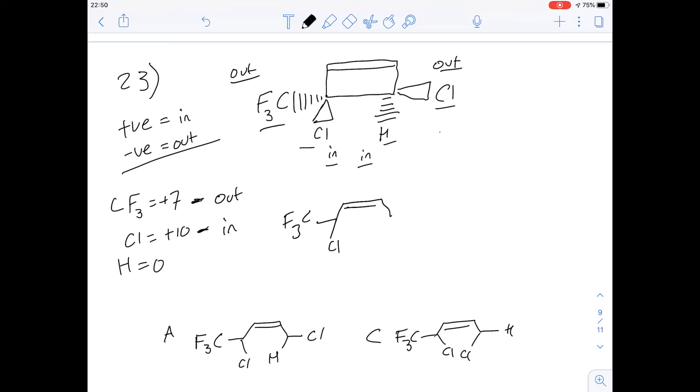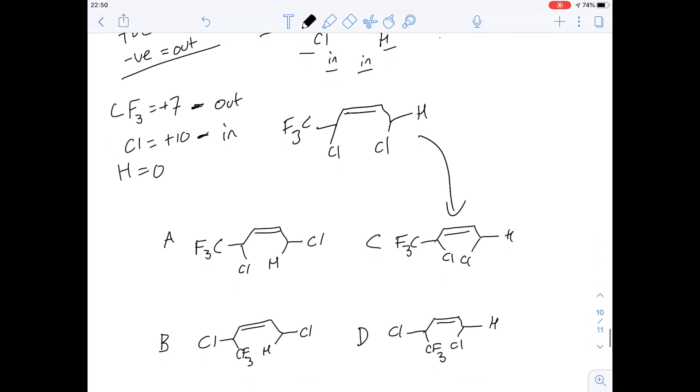Now we're going to have a look at the hydrogen and the chlorine here. The chlorine has a more positive value than hydrogen and so it will be in, so the chlorine will be in its in position here and that leaves the hydrogen in its out position. This corresponds to answer C so the answer for number 23 is going to be C.